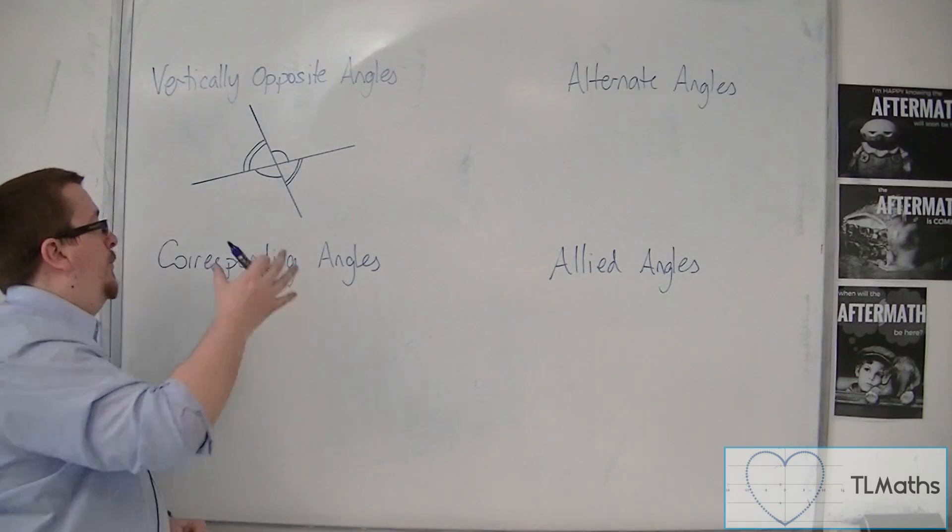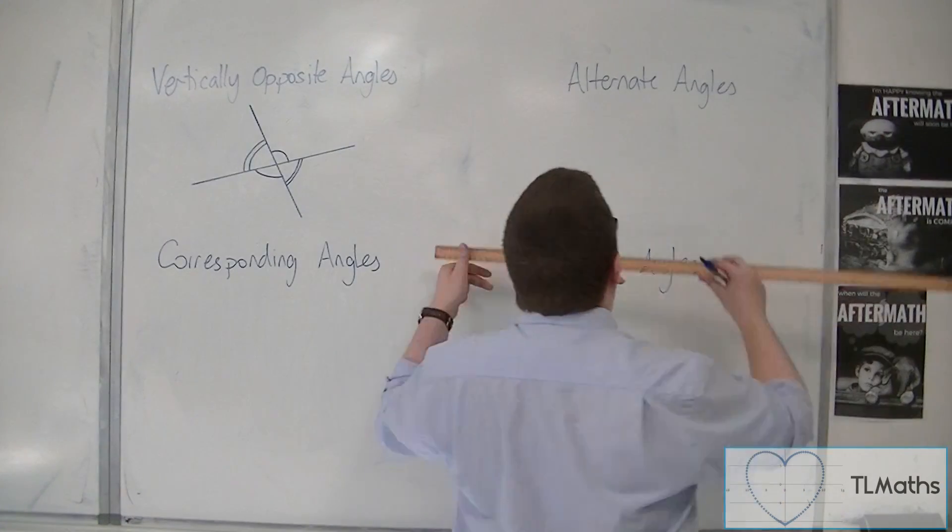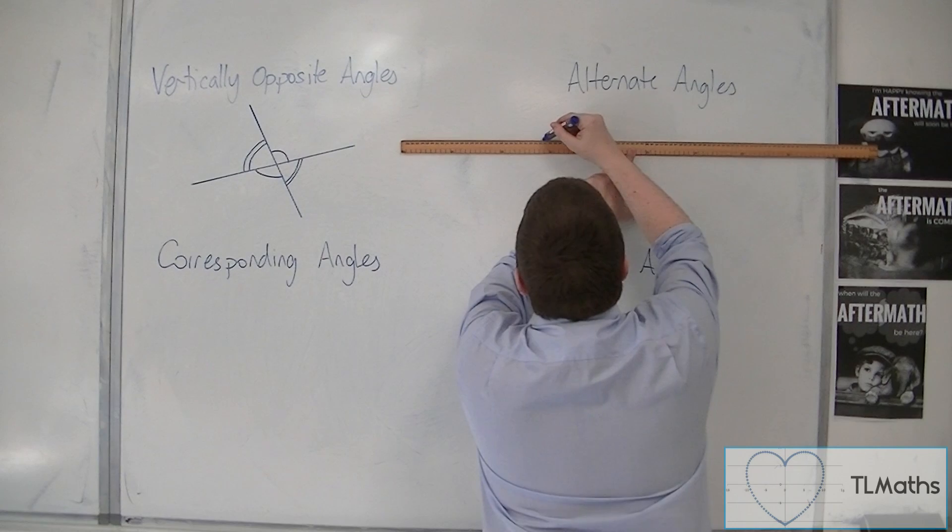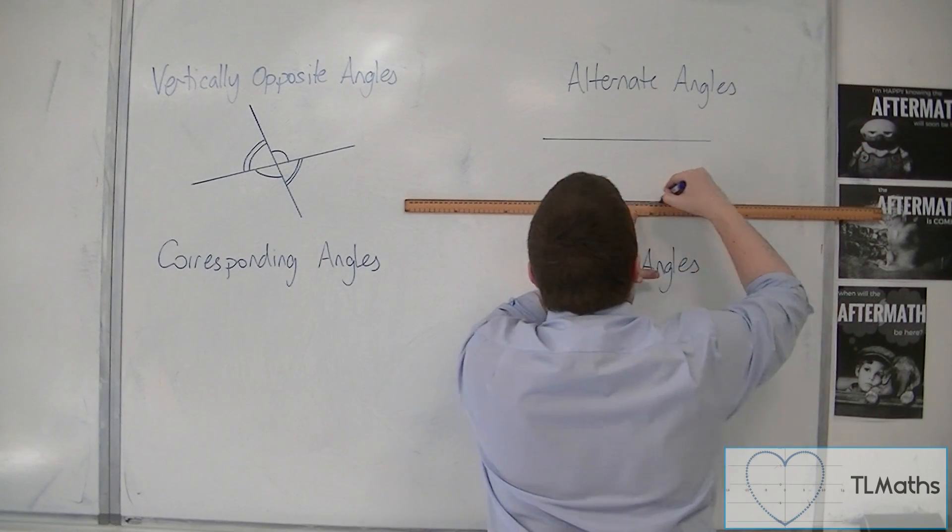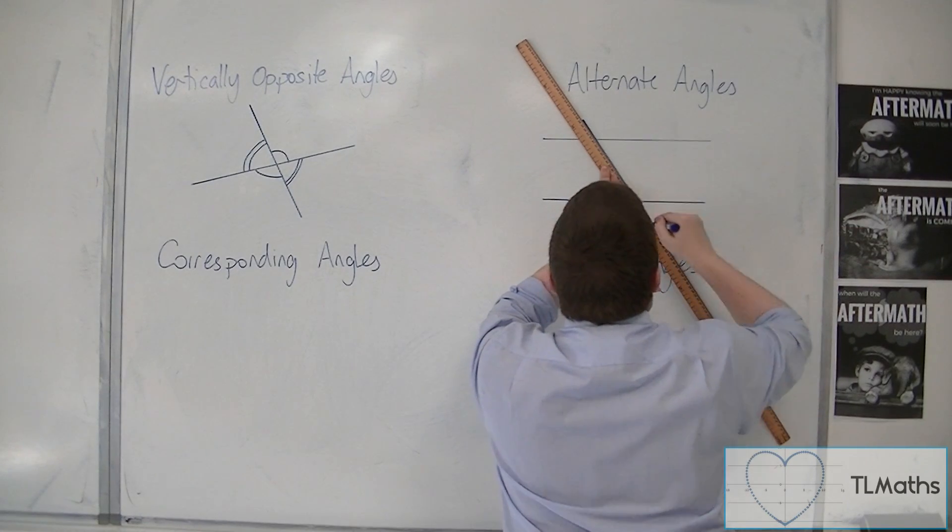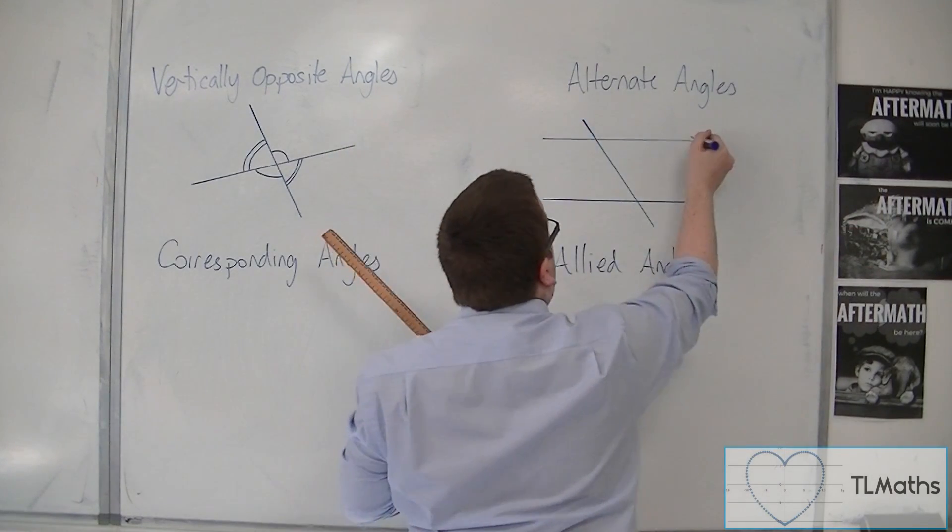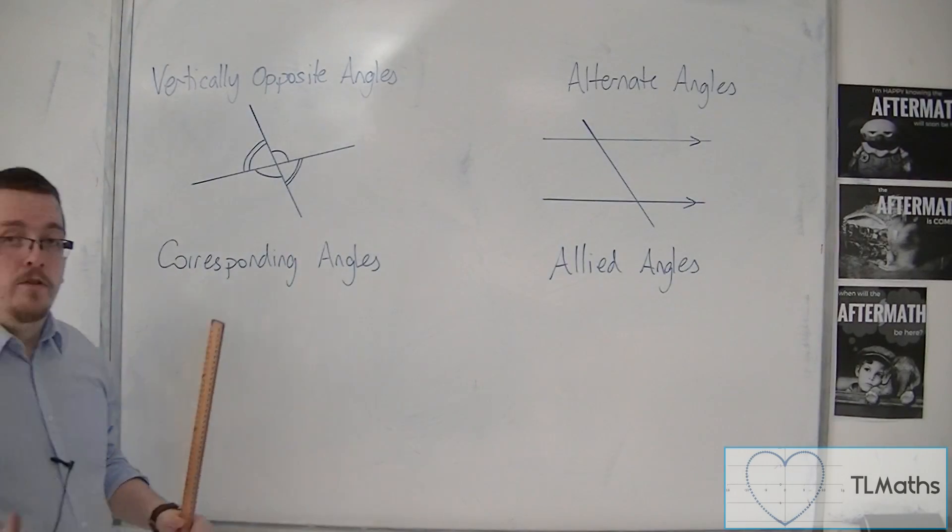Alternate angles, corresponding and allied angles all work between two parallel lines. So if we draw two parallel lines here, and then we cross them with another line. So here are my parallel lines, and then I have this other line running across them.